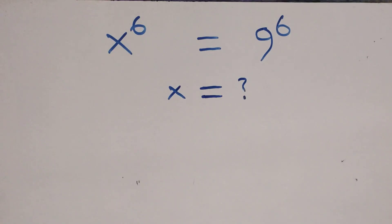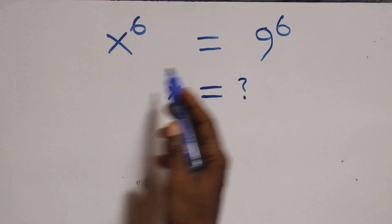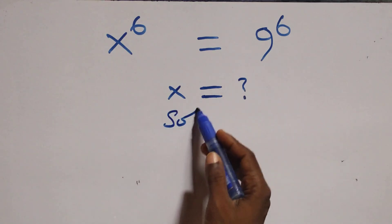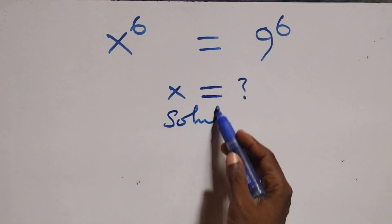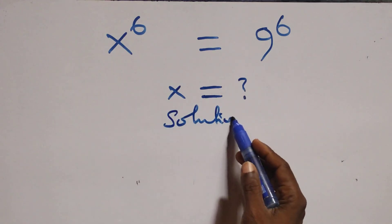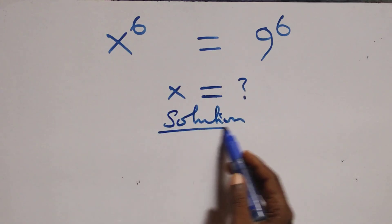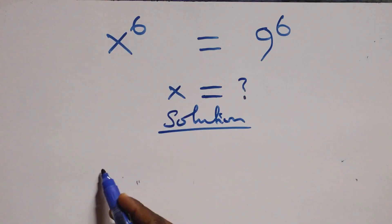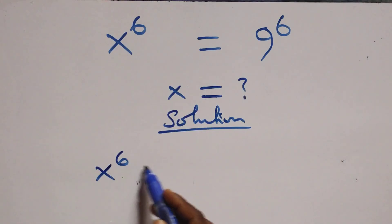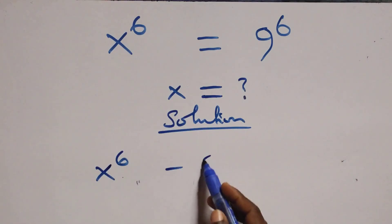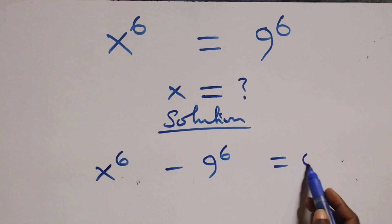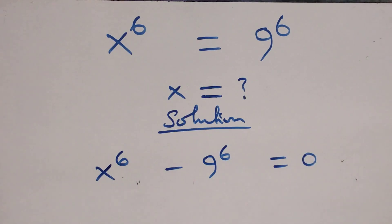Hello, you're welcome. How to solve this nice exponential equation — solution from here. What we have here: we take 9 raised to the power 6 to the left-hand side, so we have x raised to the power 6 minus 9 raised to the power 6 equals to 0.